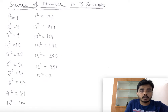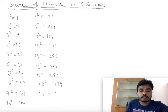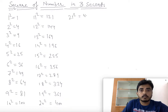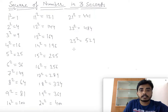17 squared is 289, 18 squared is 324, 19 squared is 361, 20 squared is 400, 21 squared is 441, 22 squared is 484, 23 squared is 529, 24 squared is 576, 25 squared is 625.